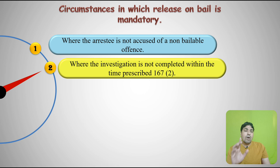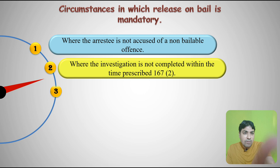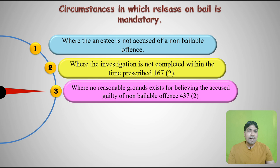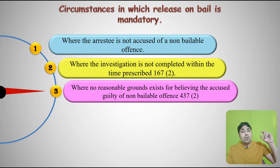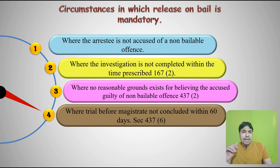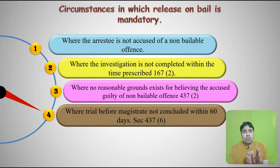The third circumstance is where further inquiry is required under section 437 sub-clause 2, and the court feels so — in that situation the court must release the accused on bail. The fourth one is where the trial before the magistrate is not concluded within 60 days under section 437 sub-clause 6. If trial is going on in lower court and the accused is in jail, and the trial is not completed within 60 days from when it started, then the accused shall be released on bail; it is mandatory.